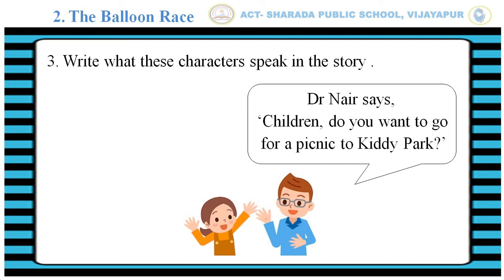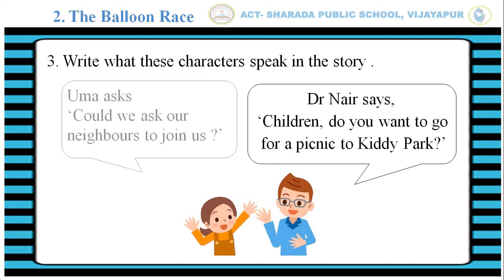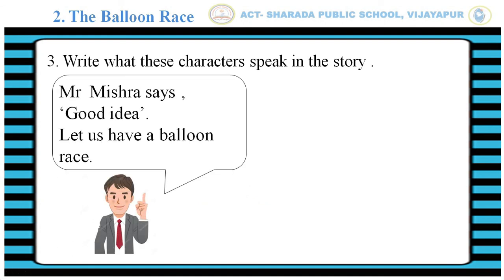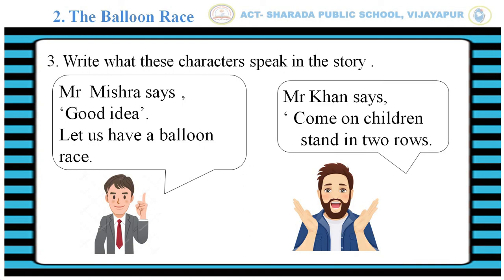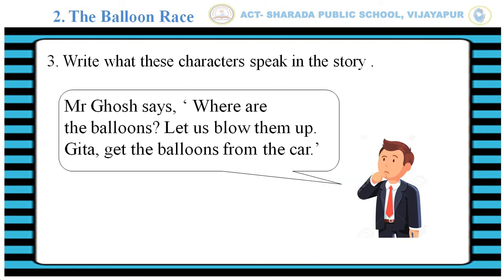Do you want to go for a picnic to Kiddy Park? Uma asks, could we ask our neighbors to join us? Mr. Mishra says, good idea, let us have a balloon race. Mr. Khan says, come on children, stand in two rows. Mr. Ghosh says, where are the balloons? Let us blow them up. Geeta, get the balloons from the car.